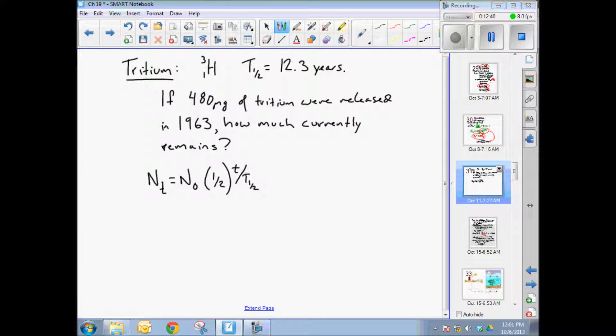So n is equal to elapsed time. The elapsed time from 1963 to this year, 2013 is equal to 50 years. Exactly. So we're going to have 50 years over the time per half life is 12.3 years. So the number of half lives that it's gone through 4.065, just over four half lives.